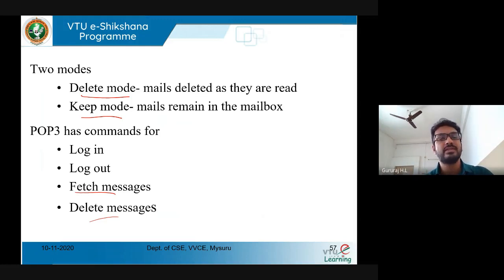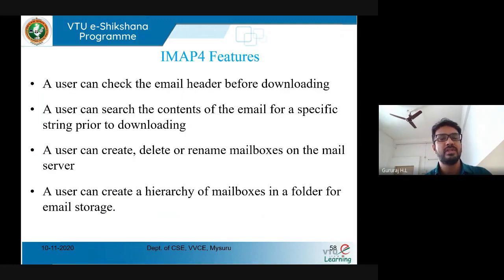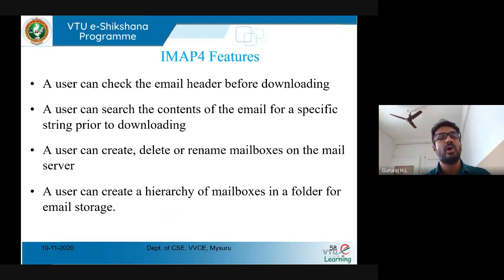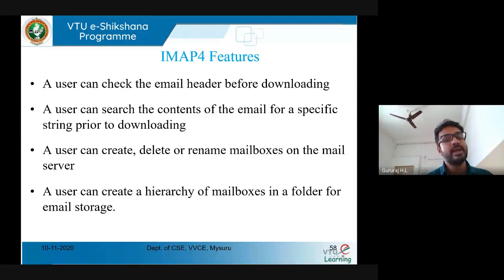IMAP features allow a user to check the email header before downloading. The user can check the header with the subject line and can search the contents of the email for a specific string prior to downloading — they won't download all mails or attachments unless the header looks valid. The user can also create, delete, and rename mailboxes, and create a hierarchy of mailboxes in folders in email storage, such as primary, secondary, etc., all with the help of the IMAP protocol.